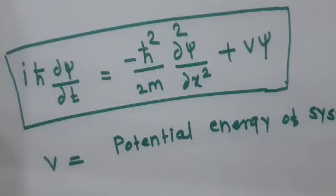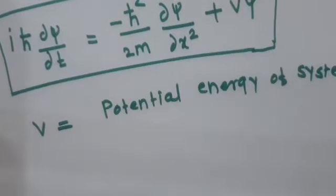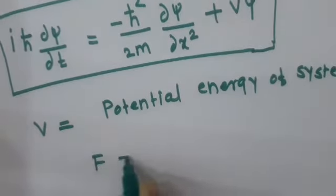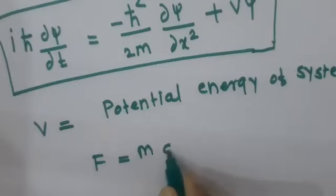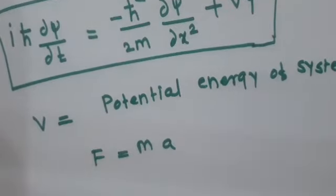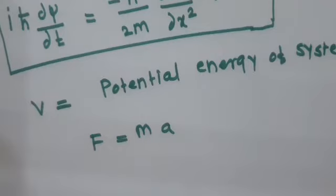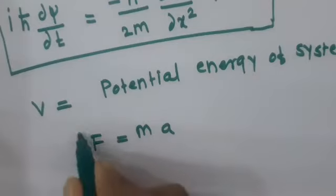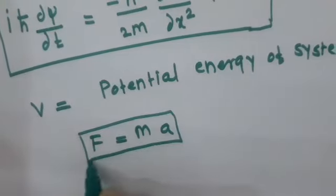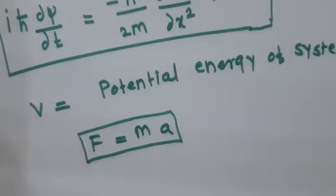The Schrödinger wave equation in quantum mechanics plays the same role as Newton's second law of motion plays in classical mechanics. In classical mechanics, force equals mass times acceleration. The Schrödinger wave equation is analogous to Newton's second law. In quantum mechanics, you cannot define the exact location of a particle.